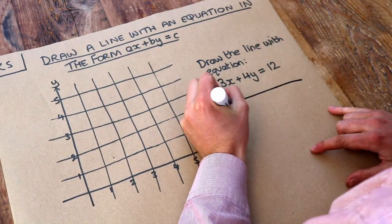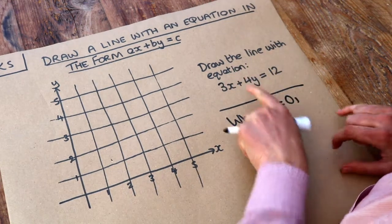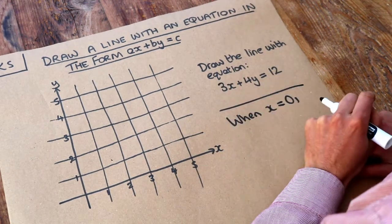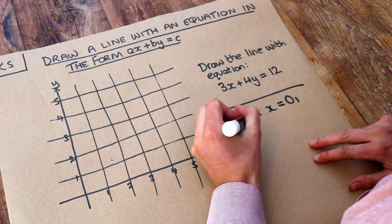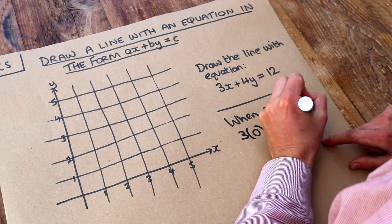Let's do that. When x is zero, what would y have to be? If x is zero, we substitute that into the equation, so we have three times zero plus four y equals twelve. Now three times zero is just zero, so we get four y equals twelve.